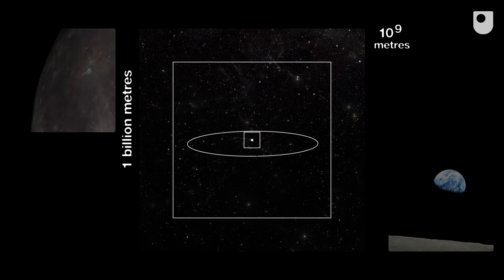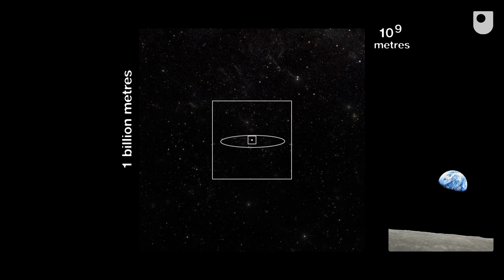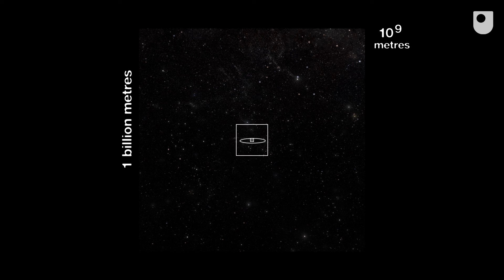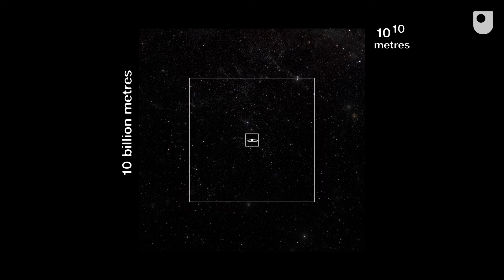The Earth is now just a pale blue dot in a sky full of stars. Even as we accelerate away, the stars appear stationary, because they're so much further away. So much empty space. Let's illustrate the orbits of the planets in our solar system, otherwise this could get a bit dull.